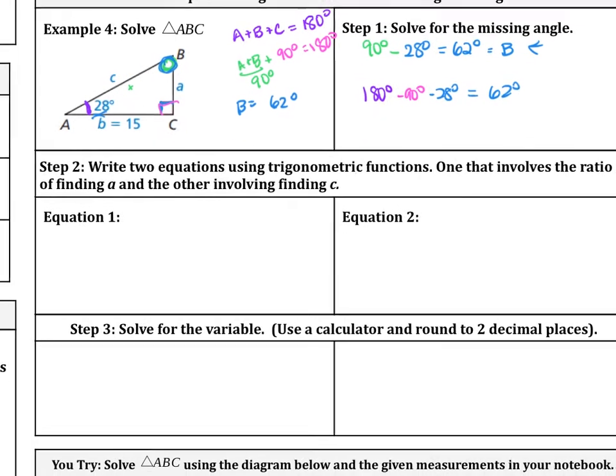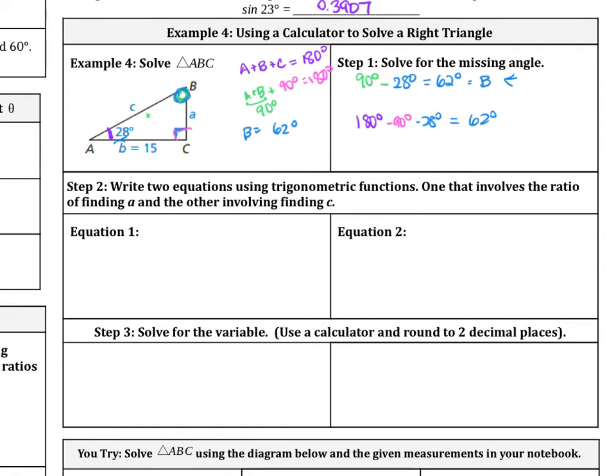Next we need to write two equations using trig functions, one that involves a ratio of finding A and the other involving finding C. Let's look at this triangle here. We're given 28 degrees, we know this side here, and so what is this side in relation to that angle? We're looking at either it is the hypotenuse, the opposite, or the adjacent. Because it's our adjacent, let's start with A. Given this is 28 degrees, this will be opposite over adjacent, and opposite over adjacent is tangent. So tangent of 28 degrees equals opposite, which is A, over our adjacent, which is 15.